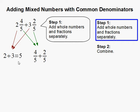2 plus 3 is 5. 4 fifths plus 2 fifths, the denominator remains the same, and you add 4 and 2, and that will get you 6.